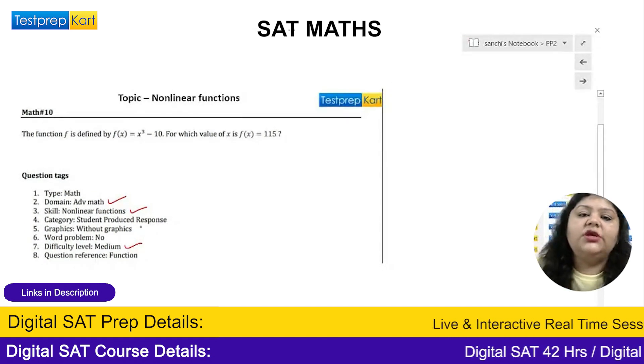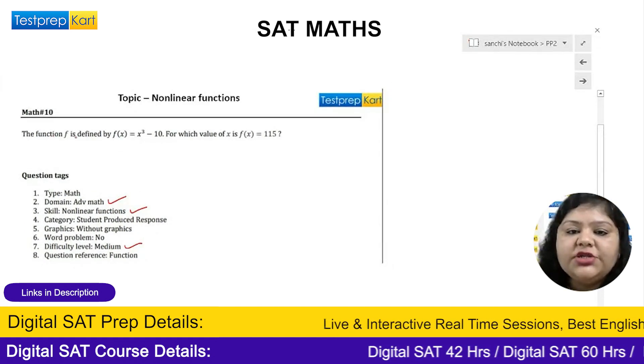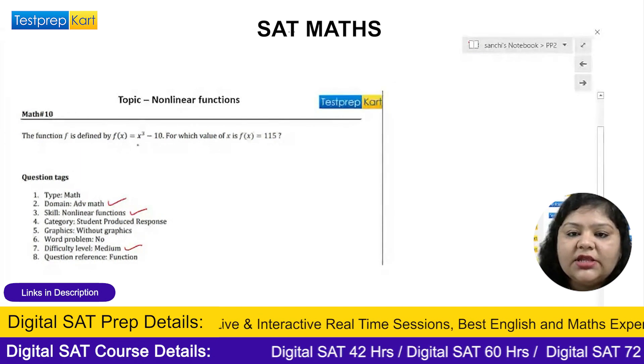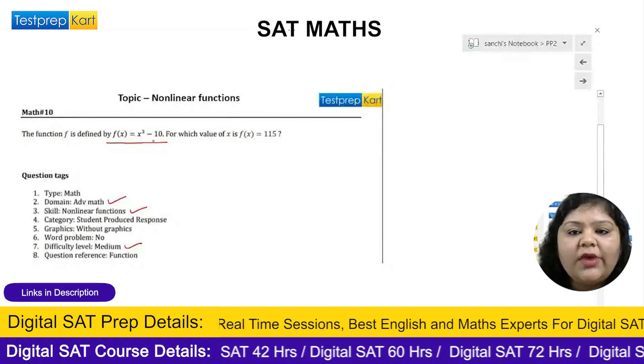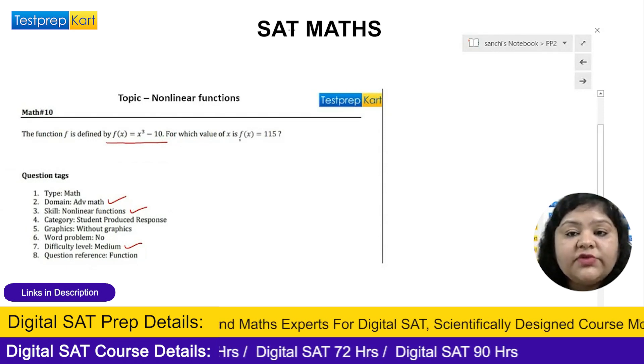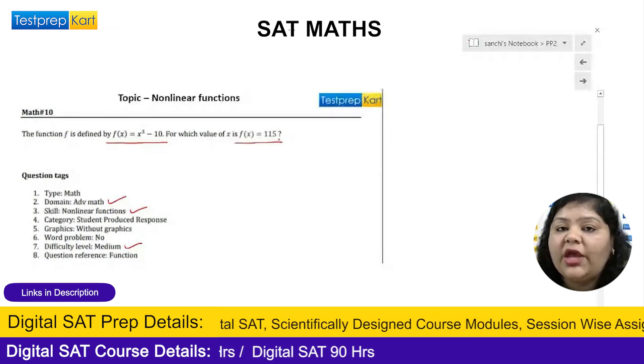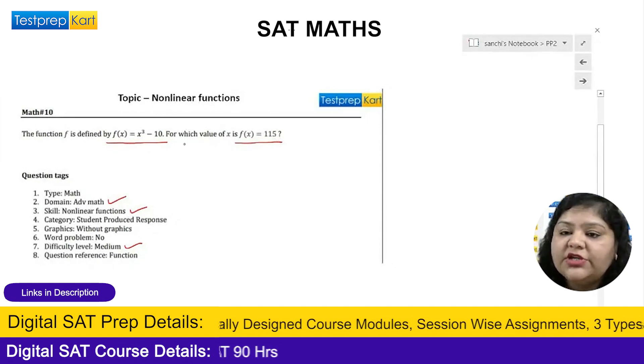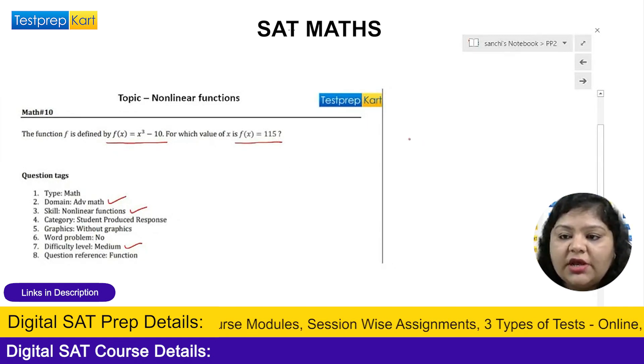The question says the function f is defined by f(x) = x³ - 10. The question is asking for which value of x is f(x) equal to 115. So one function is mentioned here, so let me just write down the function for you.